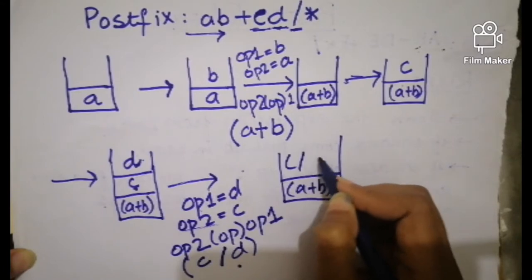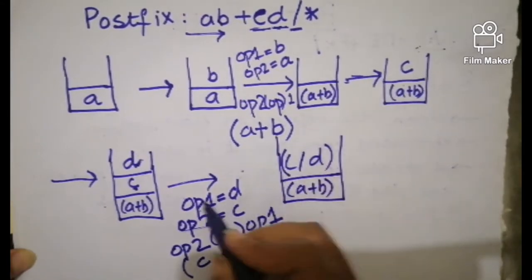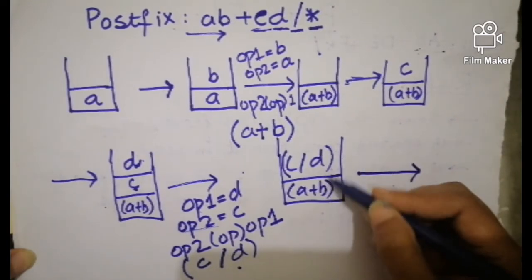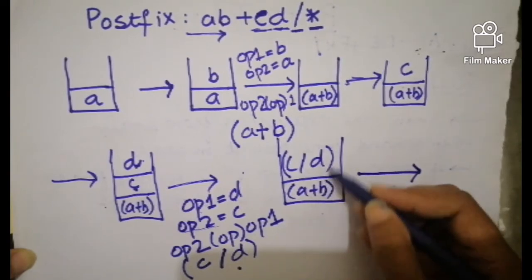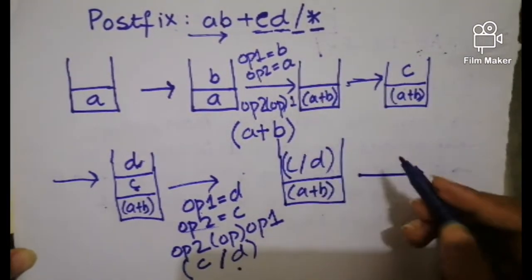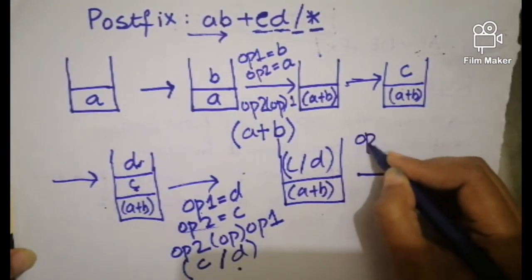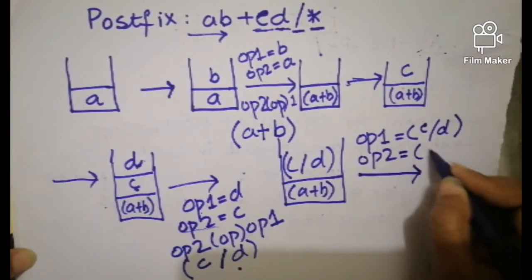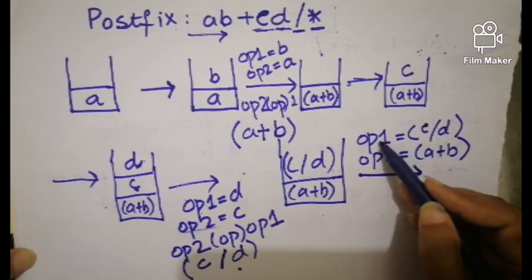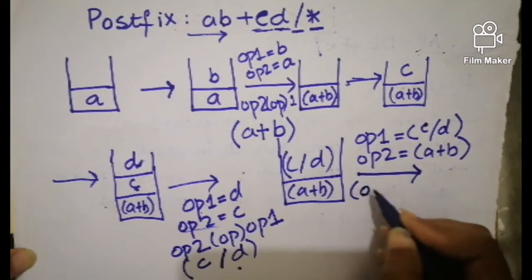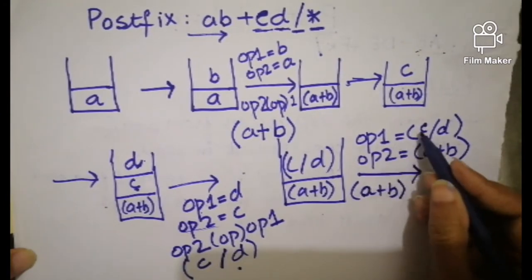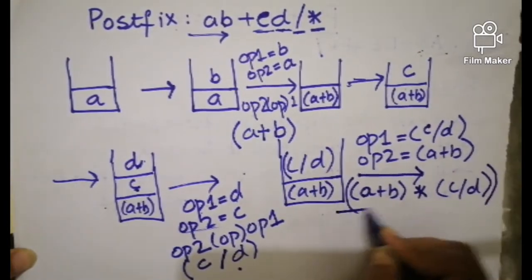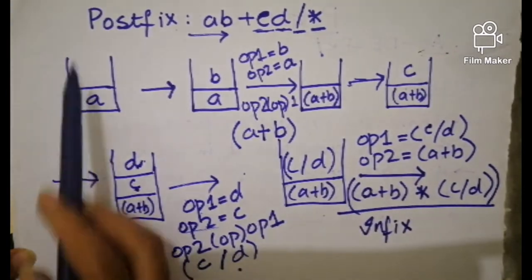The result is c divided by d in brackets. The next one is also an operator, so we pop these two expressions from the stack. Operand two is (a + b) and operand one is (c / d), and the operator is multiplication. So we write: (a + b) multiplication (c / d), place the brackets. This is the infix expression we get from this postfix expression.